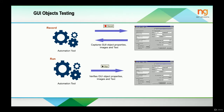In this slide, you can see that the automation tool first records the object properties, images and text. Then we run the same to verify all the GUI object properties, images and text. We will be using the record feature of the automation application to record our cursor movements, and then run those same for our test cases.